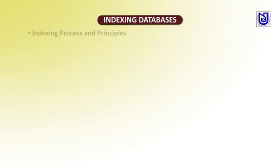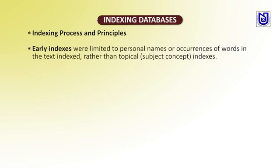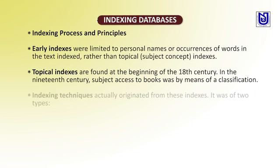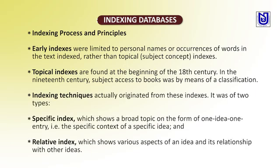What are the indexing processes and principles? Early indexes were limited to personal names and occurrences of words in the text indexed, rather than topical subject or concept indexes. Topical indexes are found at the beginning of the 18th century. In the 19th century, subject matter access to books was by means of classification. Indexing techniques actually originated from these indexes. There were two types: specific index, which shows a broad topic in the form of an index from an entirely specific context and idea, and relative index, which shows various aspects of an index and its relationship with other ideas.